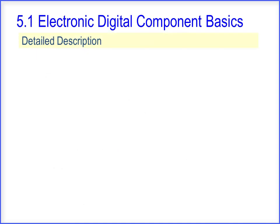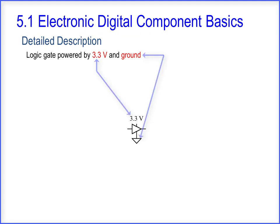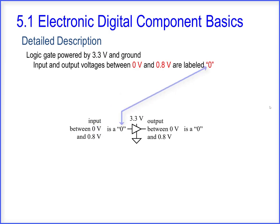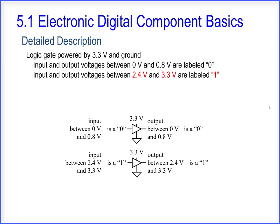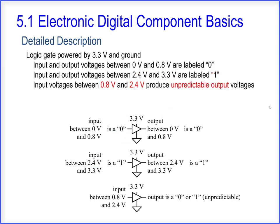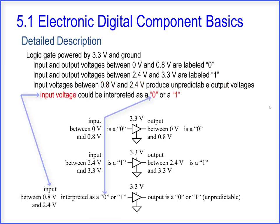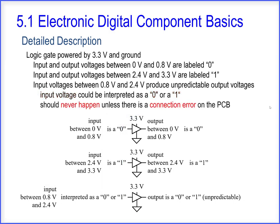We'll clarify further with a detailed description. Using a logic gate powered by 3.3 volts and ground: input and output voltages between 0 volts and 0.8 volts are labeled 0; voltages between 2.4 volts and 3.3 volts are labeled 1. Input voltages between 0.8 volts and 2.4 volts produce unpredictable output voltages — the input could be interpreted as a 0 or a 1. This should never happen unless there is a connection error on the PCB.